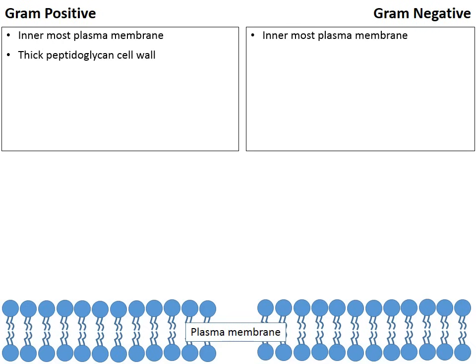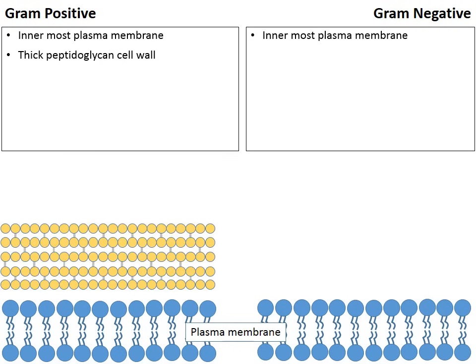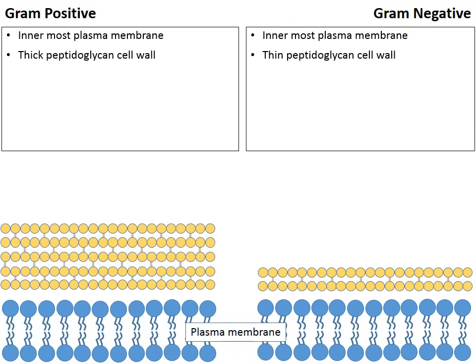Gram-positive bacteria have a thick cell wall made up of peptidoglycan — about five layers thick in my animation. Gram-negative bacteria also have a cell wall, it's just thinner — only two layers thick in my animation. These are both the cell walls of the bacteria cells.